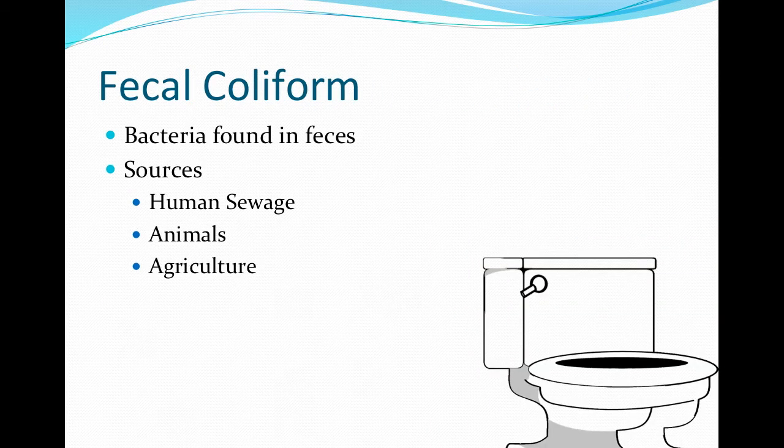Fecal coliforms are a type of bacteria that are found in the intestines of warm-blooded animals. Although most strains of this bacteria are harmless, some can cause illness. A large amount of fecal coliform bacteria can indicate contamination from septic systems or animal farms.